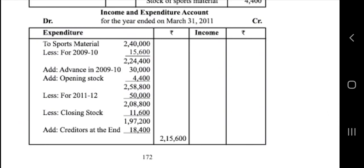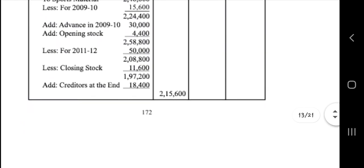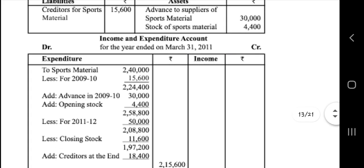In the next section here you have to write 40,000 minus 15,600 because that is less. And add is 2,24,000 plus 30,000 plus 4,000, and less is 2,58,000 minus 50,000. Add credit that is 2,18,000 plus 18,000 plus 18,000, so total is 2,16,600 as the expenditure.